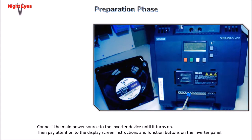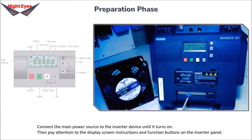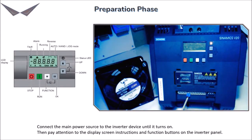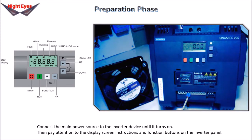Connect the main power source to the inverter device until it turns on. Then pay attention to the display screen instructions and function buttons on the inverter panel.